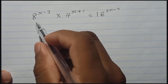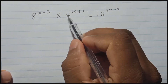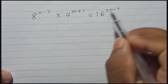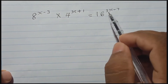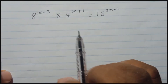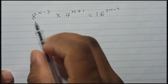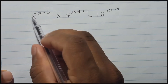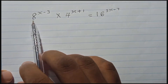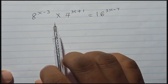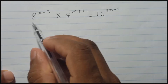Let's think about how to do this question. Here you can see 8, 4, and 16 — these all have an index, and with that index you have an unknown letter x. So what we can do: 8, 4, and 16 are different bases, but you can make them the same base. Normally this type of question will be given that way.